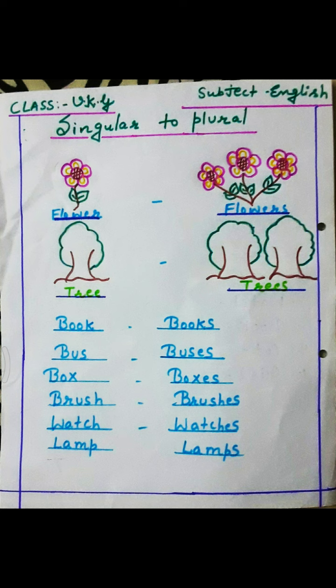Singular denotes one thing and plural denotes more than one thing. Children, look here — one flower. And here more than one flower. Similarly here one tree. And here? More than one tree.